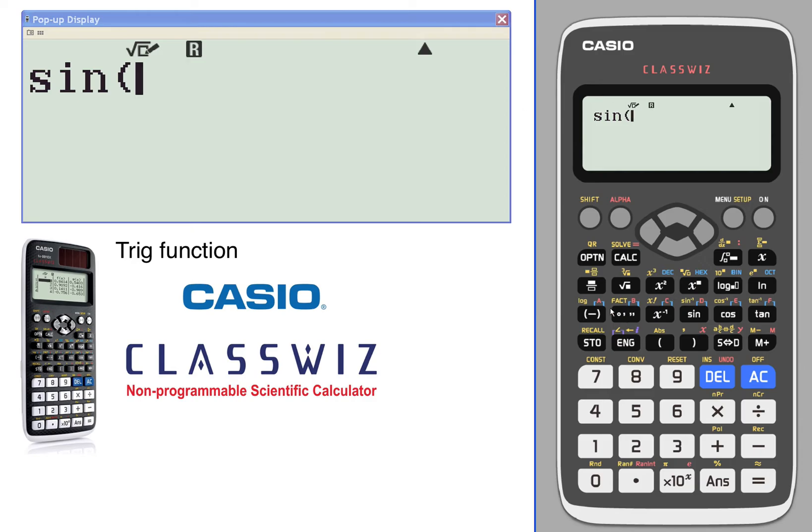So let's go with pi over 3. The pi is right above the x times 10 to the x power. So we're going to go pi, shift and pi, over 3. Sine of pi over 3. Square root of 3 over 2. Again, exact radical answer.